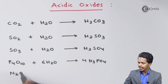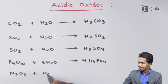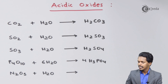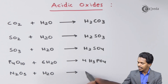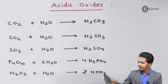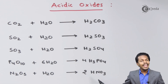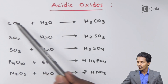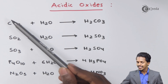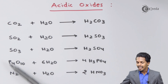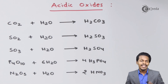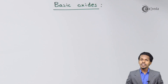Another example is N2O5, nitrogen pentoxide. If N2O5 is reacted with water, the product formed is two moles of HNO3, which is known as nitric acid. All of these acids are produced by the reaction of water with the respective oxides, and therefore these oxides are known as acidic oxides.